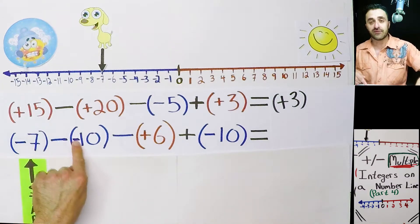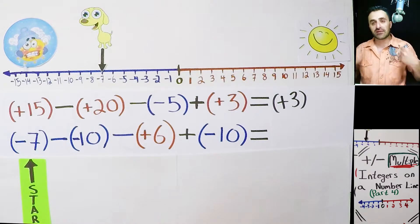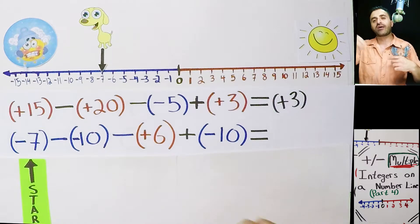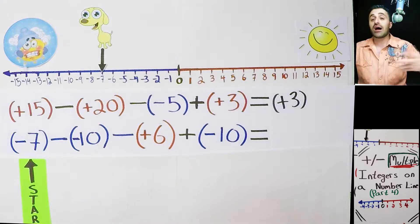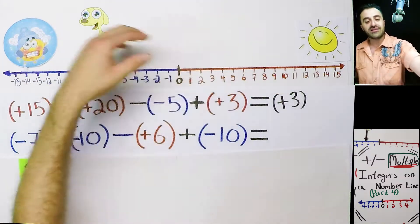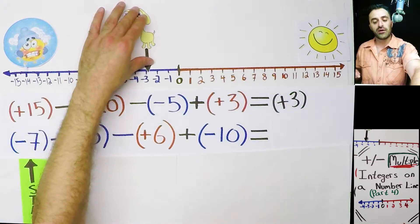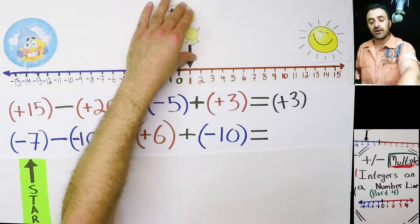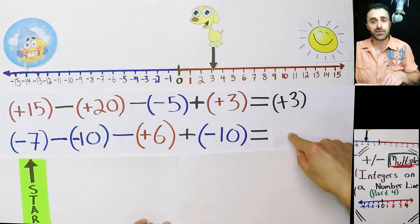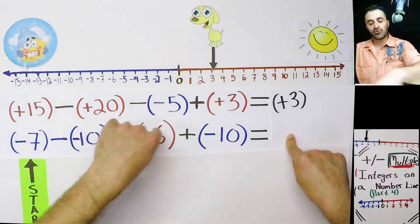Which way do we move if we're subtracting cold? Let's think about this. You subtract cold, you suck it out. It's not cold anymore, it's getting hotter. So now puppy's got to go hotter. Ten numbers. One, two, three, four, five, six, seven, eight, nine, ten. We're at positive three. So our answer is positive three, right? No, it's not, because there's still more numbers to go.